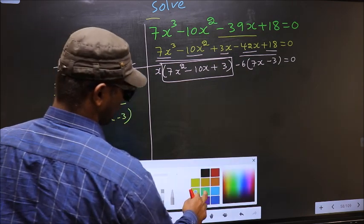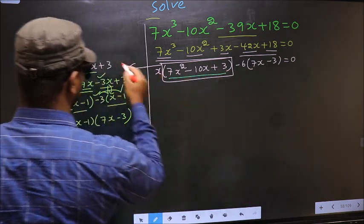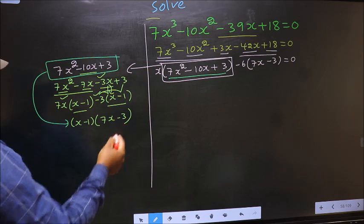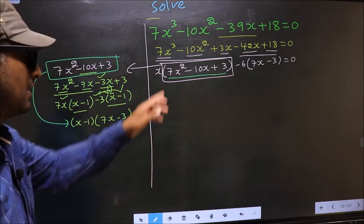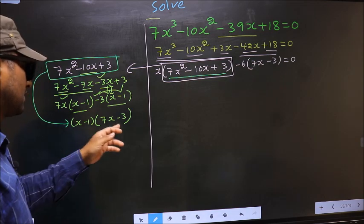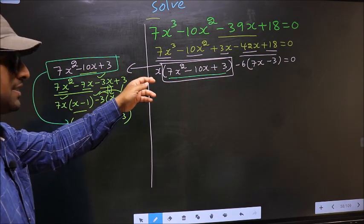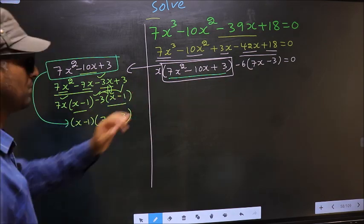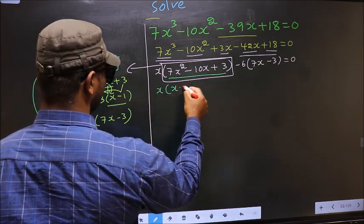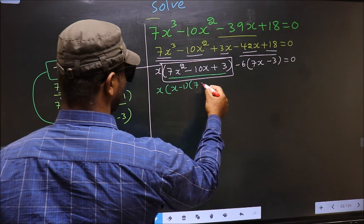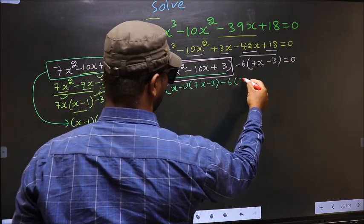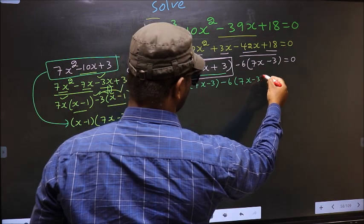In place of this quadratic, we now write (x - 1)(7x - 3). So the equation changes to: x(x - 1)(7x - 3) - 6(7x - 3) = 0.